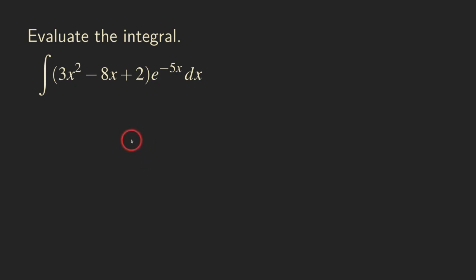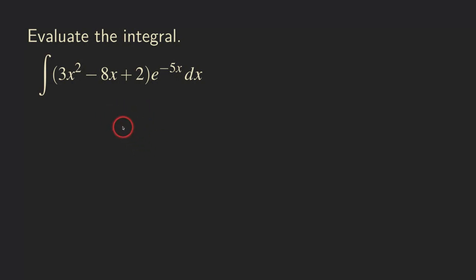Hello, everyone. Let's look at this integration by parts problem, which will require you to do it twice. So why do we need to do it twice? How do we know that, just by looking at the function?